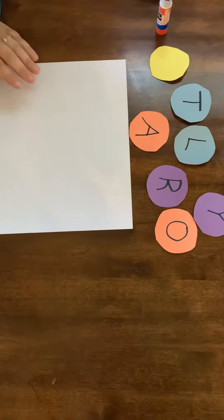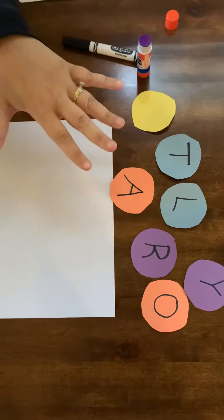All right, today parents, we're going to make a caterpillar out of your child's name. So you're going to need a glue stick, a marker, and the yellow circles that are left in your folder.